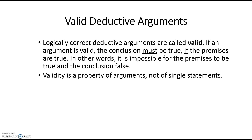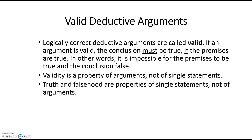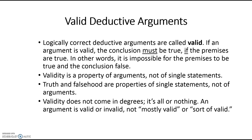It's neither valid nor invalid if I say 'the sky is blue,' because there's no argument there. But if I say all men are mortal, Socrates is a man, therefore Socrates is mortal — that's a group of statements in which one is supported by the others, and that can be either valid or invalid. Single statements can be true or false; arguments can't be true or false because arguments are groups of statements. So 'all men are mortal, Socrates is a man, therefore Socrates is mortal' is neither true nor false — it's valid or invalid. Validity doesn't come in degrees; it's all or nothing. You can't say an argument is mostly valid or sort of valid.